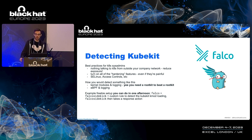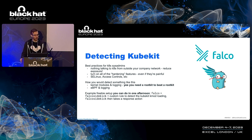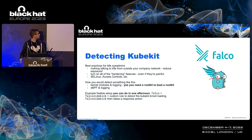Now let's unload the rootkit itself. We do this by removing the /dev/kubekit device from earlier. We run kubectl get pods again and the debug pod is visible again — and the system is still running and stable.